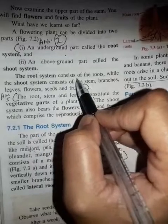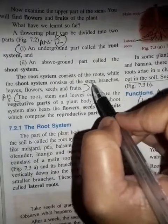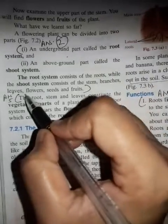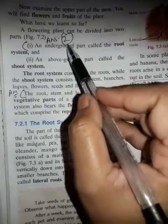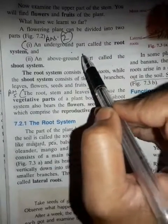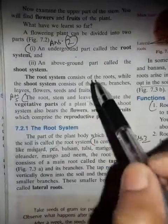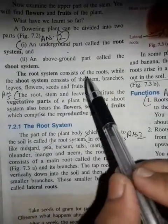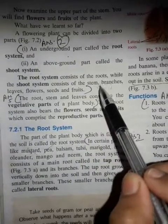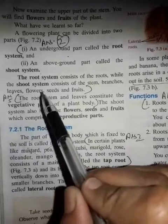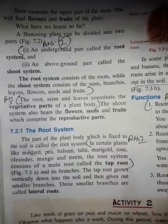The root system consists of the roots, while the shoot system consists of the stem, branches, leaves, flowers, seeds, and fruits.